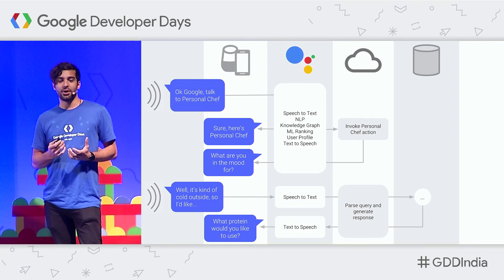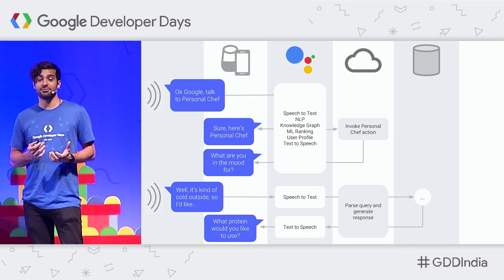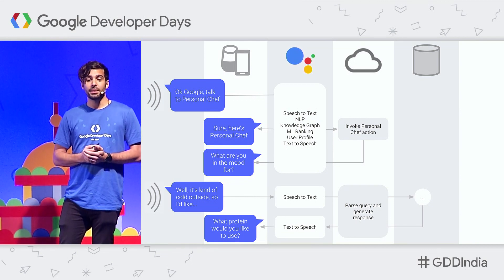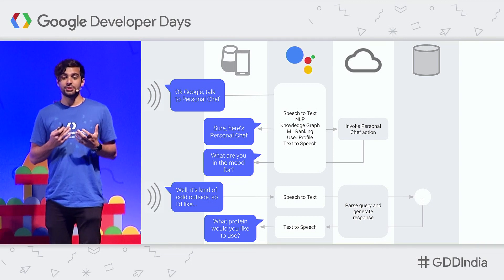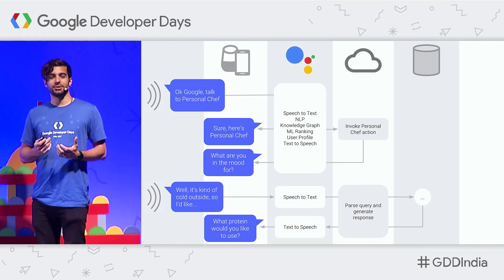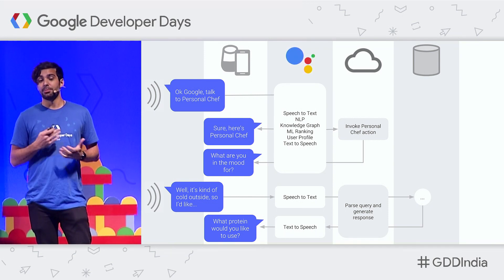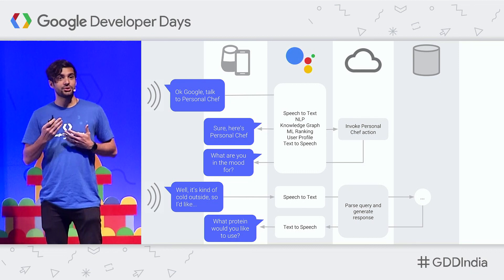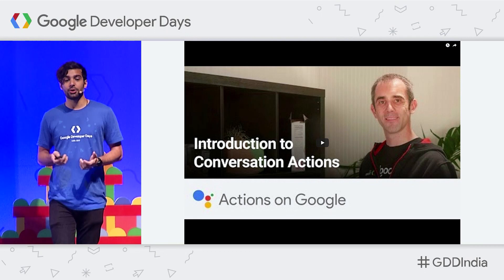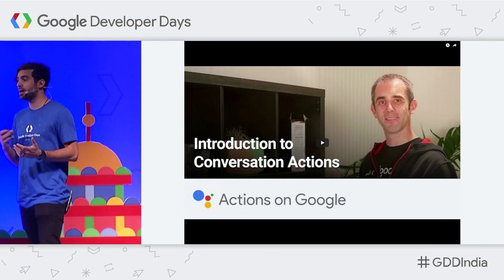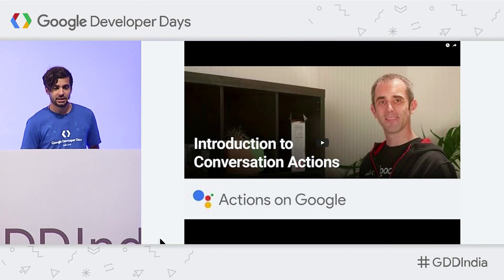First, the user needs to invoke your app. So they say a phrase like, "OK Google, talk to Personal Chef," and the Assistant will introduce your app. From this point onwards, the user is now talking to your app. Your app generates dialogue output, which is then spoken to the user. The user then makes requests, your app processes it and replies back again. So the user has a two-way dialogue until the conversation is finished. I'm going to show you a quick demo of this app called Personal Chef — we're going to dive into it a little deeper today.